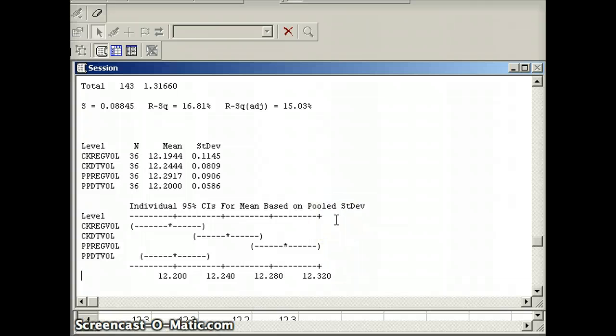So we have 95% confidence intervals for the mean. Again, they're pooling the standard deviations in this case. And does it appear that those confidence intervals are all essentially the same? And certainly looking at the Pepsis, they don't overlap at all. So that is at least some indication to us where we might have difficulty in terms of saying that the means are the same.